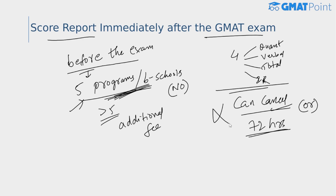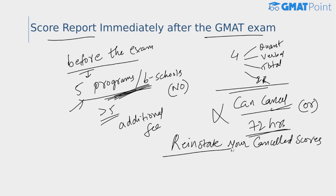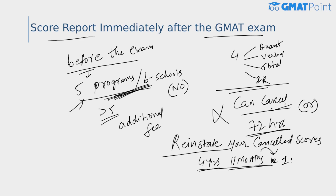If you have canceled your scores and want to reinstate them, you can do so by logging into your MBA.com account. You can reinstate canceled scores for up to four years and 11 months from the date of your GMAT, but not beyond that period — because one additional month is required for processing your score report.